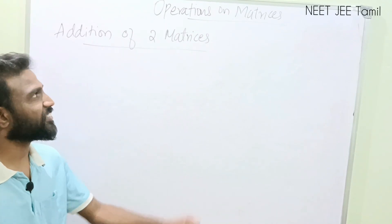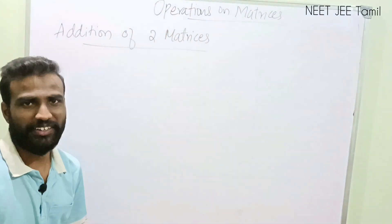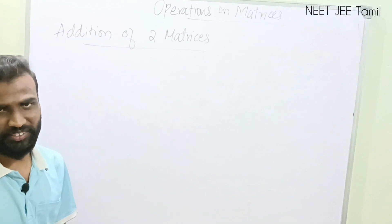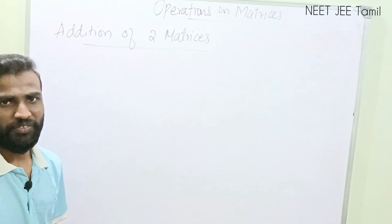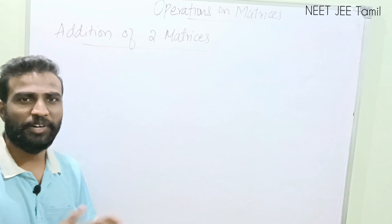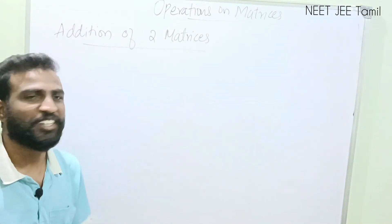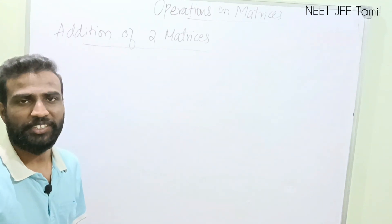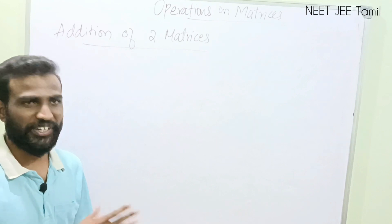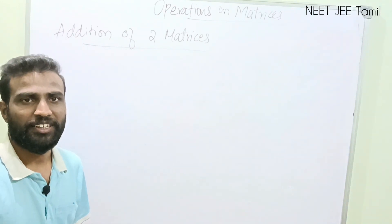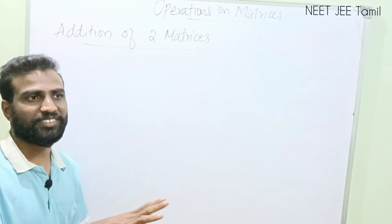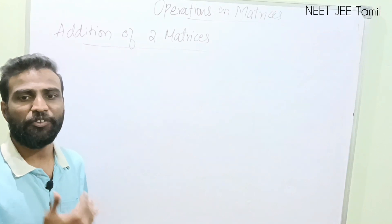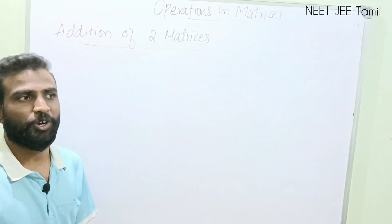The topic we are going to discuss today is operations on matrices. Basically we perform four types of operations in matrices. When we say four types, please don't say addition, subtraction, multiplication and division like in primary school. No. In matrices, we perform four types: first is addition of two matrices, subtraction of two matrices, multiplication of a matrix by a scalar (that means by a constant), and lastly multiplication of two matrices.